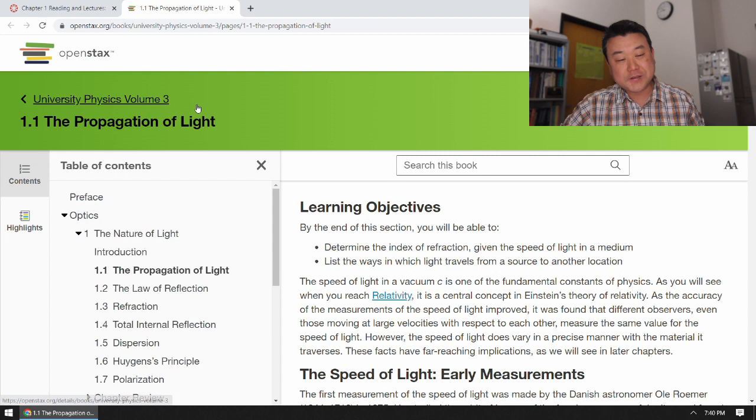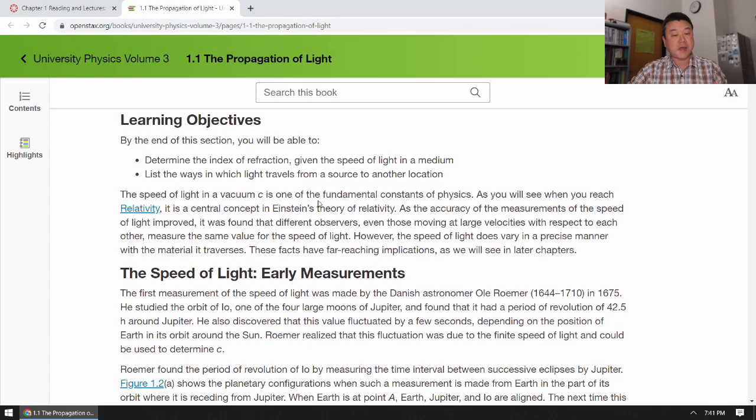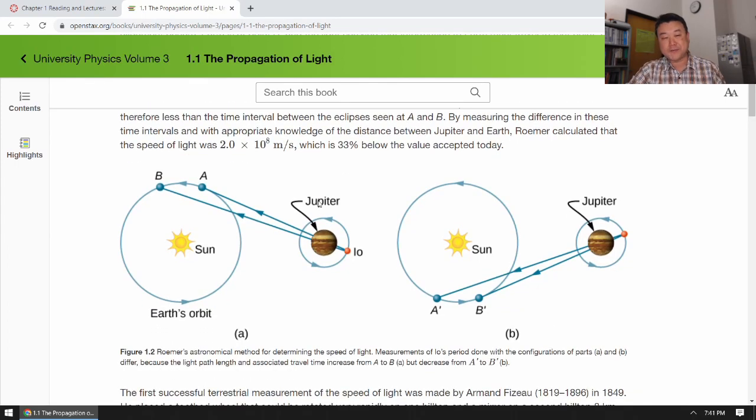So when you go to section 1.1, the propagation of light, it will cover some historical facts about light, how speed of light was first measured and all that sort of fun stuff.